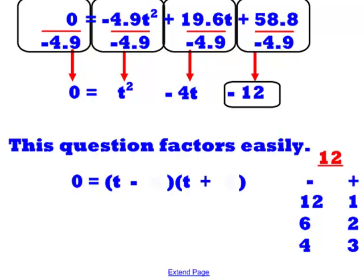So next we need to check to see which numbers work. Well, -12 plus 1 does not equal -4, so we cross it off. -6 plus 2 does equal -4, so those will be the numbers that we use. Our first factor will be -6, and our second factor will be positive 2.